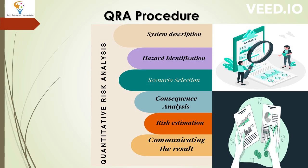The process of QRA typically involves several steps, including: 1. System Description, 2. Hazard Identification, 3. Scenario Selection, 4. Consequence Analysis, 5. Developing Risk Management Strategies and Mitigation Plans to reduce the likelihood and impact of identified risks, 6. Communicating the results of the analysis to stakeholders and decision-makers and incorporating feedback as needed.